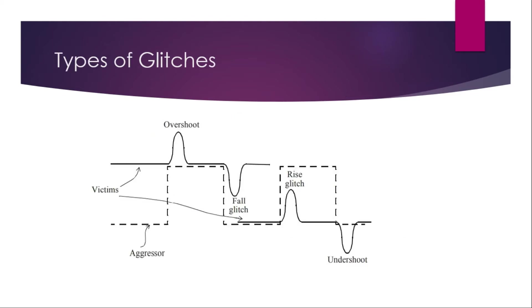There are different types of glitches. If you see, this is the victim net and this is the aggressor net. If aggressor net is 1 and victim net is also 1, they are at high logic levels. If this is at 1 and this is also at 1, it is called overshoot. The aggressor will induce noise into this and it goes beyond VDD or VCC. This is called overshoot glitch.